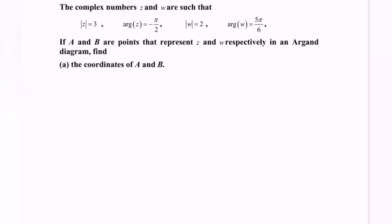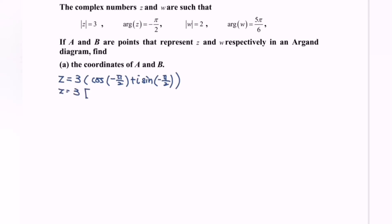Now we're going to find A, which is z. So z in polar form is equal to 3 times the bracket cos(negative pi over 2) plus i sin(negative pi over 2). We expand to get the Cartesian form. Since cos(negative pi over 2) equals 0 and sin(negative pi over 2) equals negative 1, we have z equal to 3 times (0 plus i times negative 1), so z equals negative 3i. The point A is (0, negative 3).